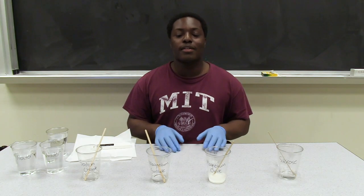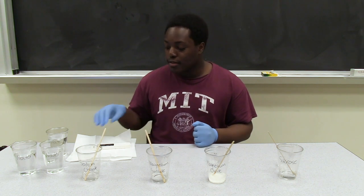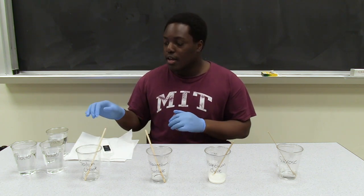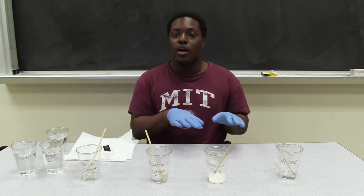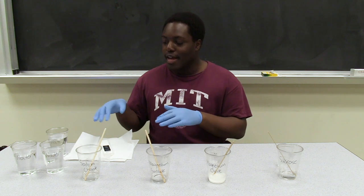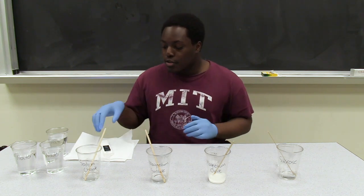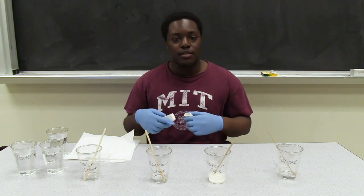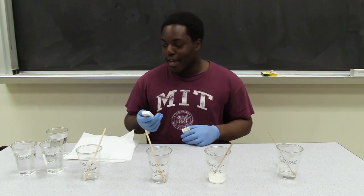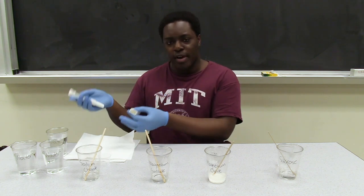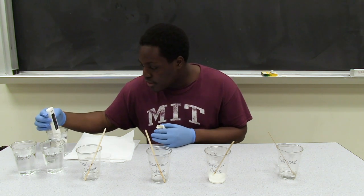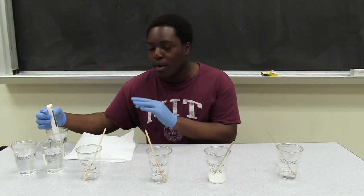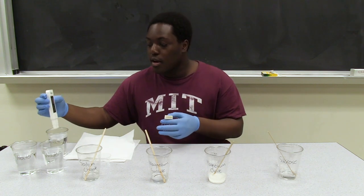The next thing we'll be doing is measuring the conductivity of our compounds when dissolved in water, using this conductivity meter. I have some cups of water prepared here to be used as both a baseline correction when measuring conductivity and as a water bath to clean our probe in between measurements. I'm going to turn on my conductivity meter and make sure that my units are set to microsiemens per centimeter. First, I'm going to measure a baseline of just regular tap water — around 900 microsiemens per centimeter. I'm going to use that as a baseline when measuring the conductivity of my other compounds.